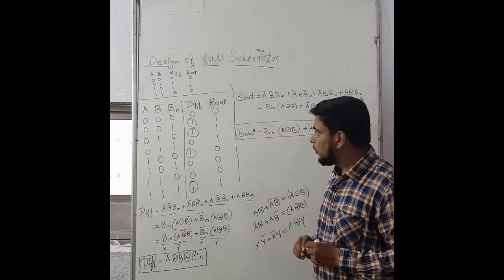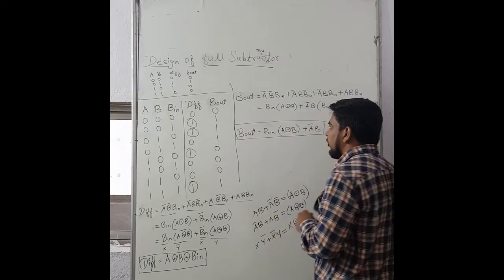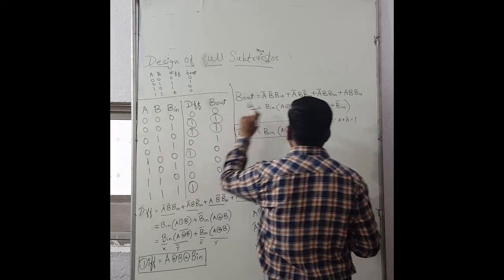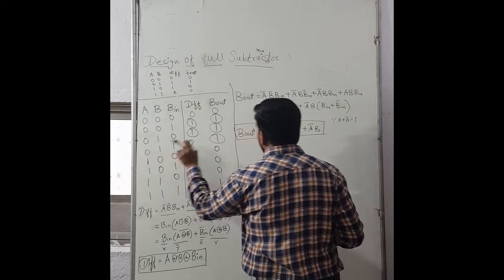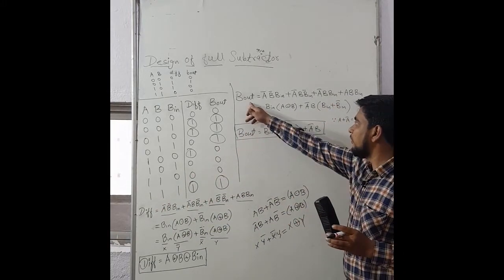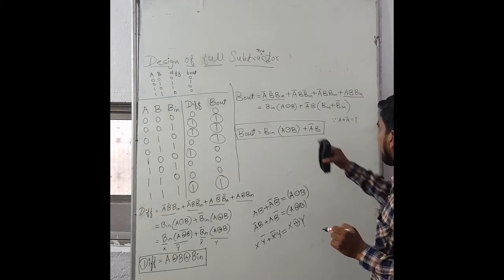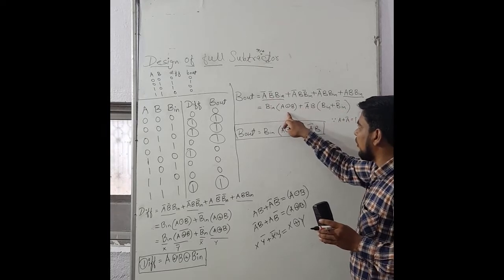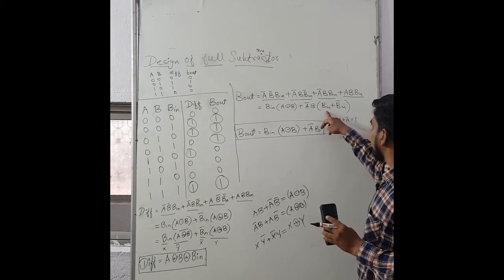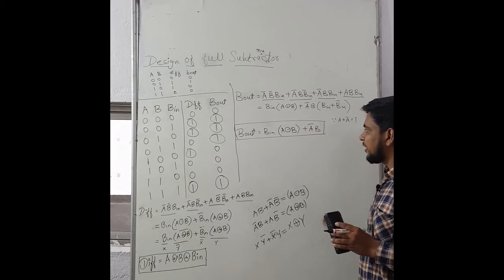For the B_out expression, we again consider the rows with output 1. The minterms are: A_bar·B_bar·B_in, A_bar·B·B_in_bar, A_bar·B·B_in, and A·B·B_in. To minimize, we take B_in common from two terms, giving B_in·(A_bar·B_bar + A·B) = B_in·(A XNOR B). From the other two terms we take A_bar·B common, and since (B_in + B_in_bar) = 1, it simplifies to A_bar·B. The minimized output expression for B_out is B_in·(A XNOR B) + A_bar·B.